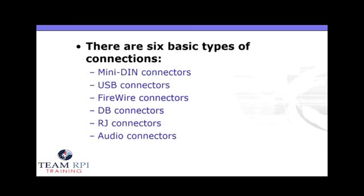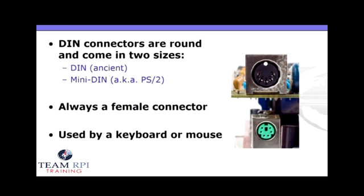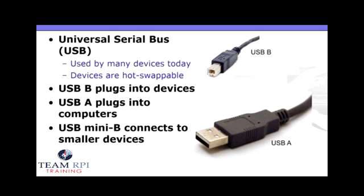There are six basic types that you'll need to understand: the mini DIN, USB, FireWire, DB, RJ, and audio connectors. The DIN connectors are the little round connectors, usually used for keyboards and mice. USB, most common with today's devices, are hot-swappable, which means you can plug them in and unplug them without having to reboot the computer. You'll usually find a USB-B plug connecting to modern printers, a USB-A plug plugging into your computer itself, and then USB mini-B connectors plugging into smaller devices like your cell phone.